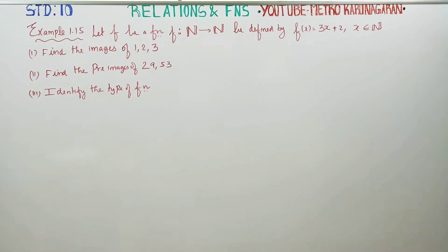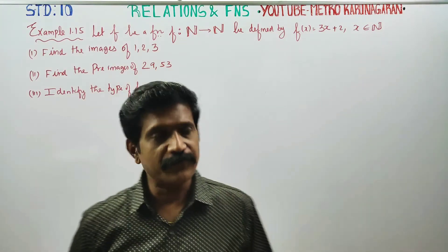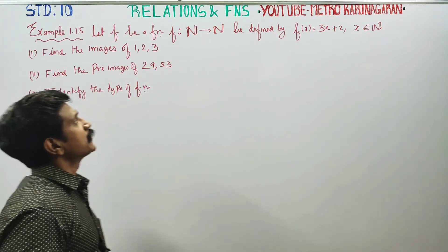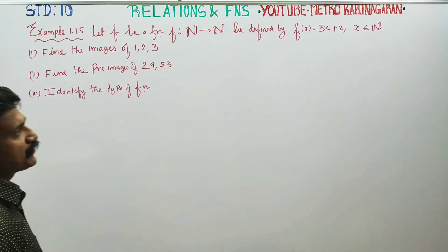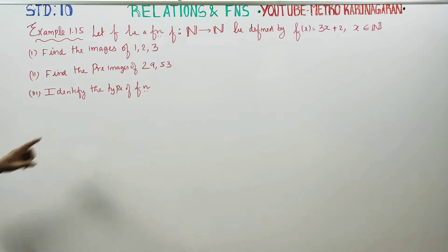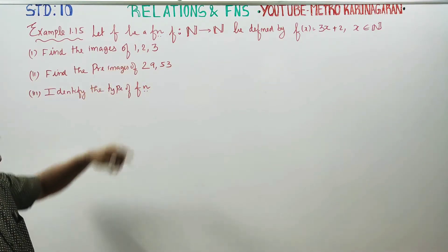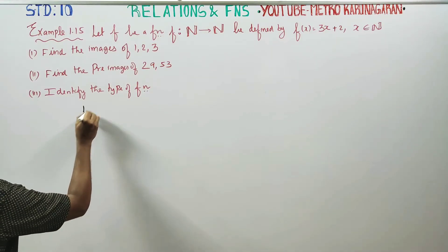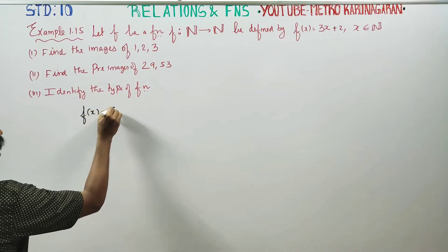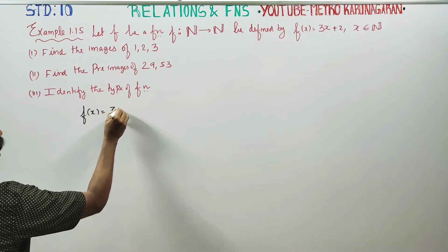Dear 10th standard students, I am Etro Karanagaran. In relations and functions, example 1.15: let f be a function from natural numbers to natural numbers defined by f(x) equal to 3x plus 2. Find the images of 1, 2 and 3. We can get the function f(x) = 3x + 2.